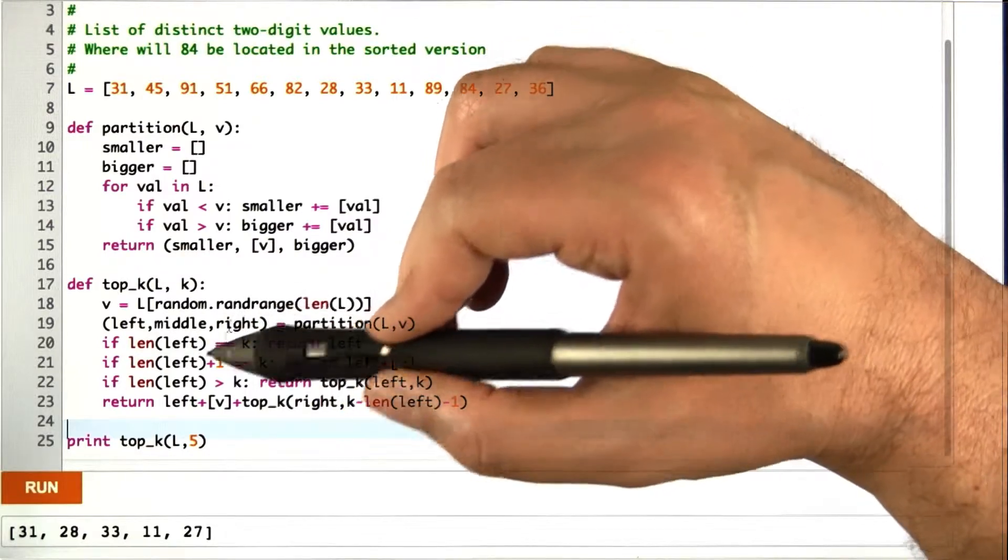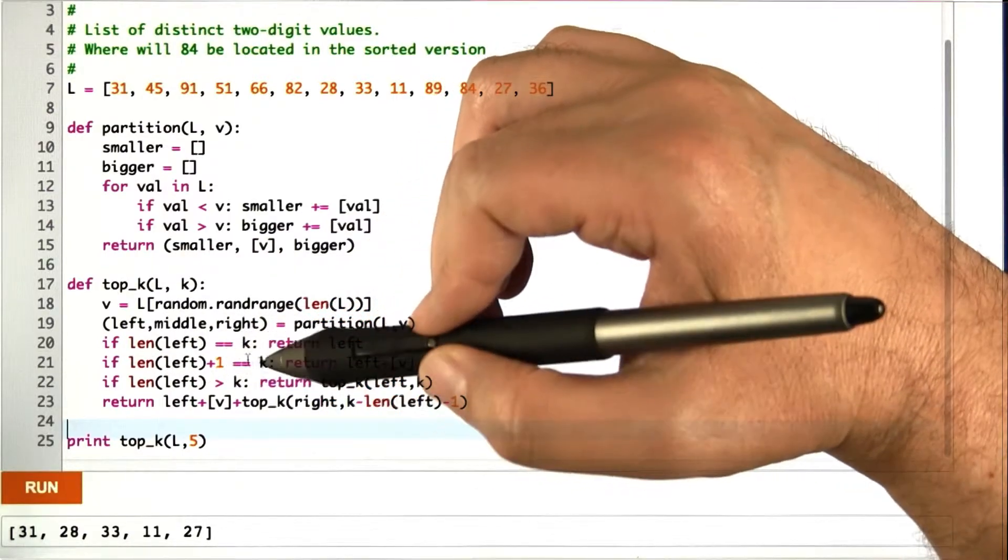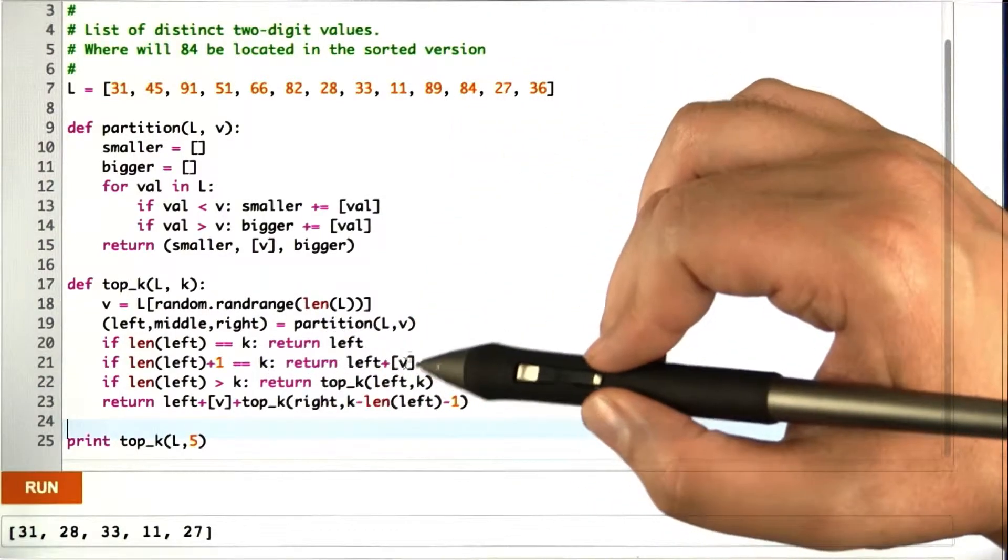Actually, I didn't talk about this before, but if the length of the thing on the left plus 1 is equal to k, then we still know the answer because it's the stuff on the left and including v.